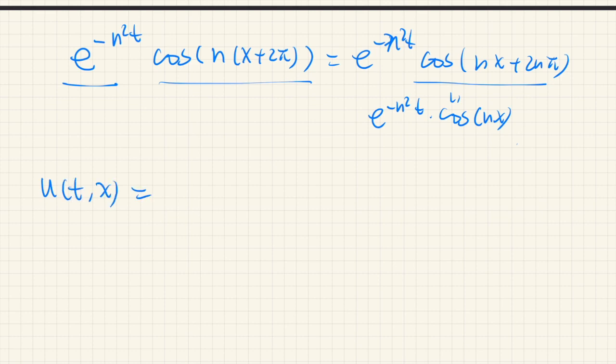And the general solution is this: the linear combination of all these functions. And when n is equal to 0, we just have this term. And this term with n equal to 0, so it's a constant. So linear combination would be just constant.